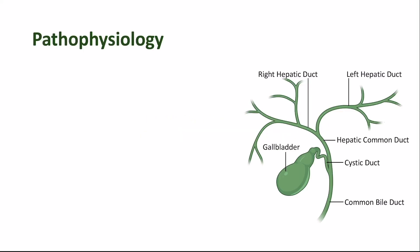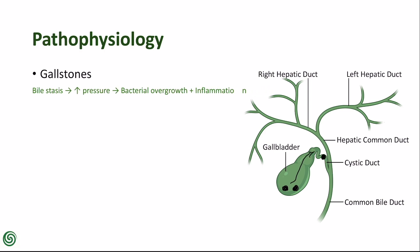Cholecystitis most commonly occurs when a gallstone obstructs the cystic duct. This leads to bile stasis, increased intraluminal pressure, bacterial overgrowth, and gallbladder wall inflammation.